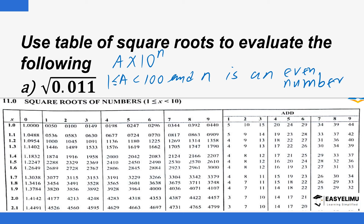The rule is: n must be an even number, and a should satisfy 1 ≤ a ≤ 100. So a should be less than 100 but can be equal to 1. That is what you are supposed to do as you try to find the square roots of these numbers.